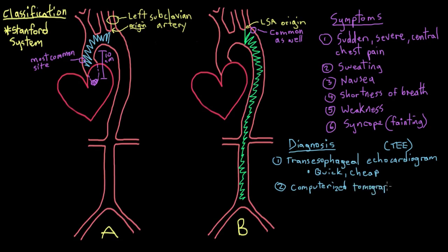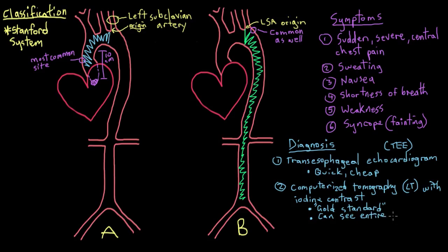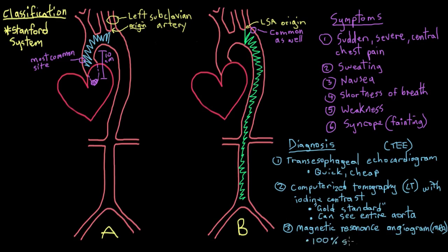A CT, or computerized tomography scan with contrast, is the gold standard for diagnosing dissections. You can use it to image the entire length of the aorta, and you can inject an iodine-containing liquid into the patient's circulatory system to make the heart, aorta, and other blood vessels more visible. A magnetic resonance angiogram, or MRA, is actually 100% sensitive and specific for picking up aortic dissections — meaning if there is a tear, the MRA will pick it up and accurately diagnose it. However, CT remains the gold standard because doing a CT comes with less risk to the patient than an MRA.